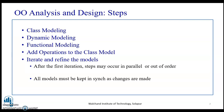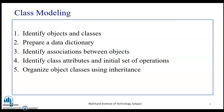After completing these steps, you iterate and refine the model. After the first iteration, steps may occur in parallel or out of order. All models must be kept in synchronization as changes are made. The first step is to create a class model, then the dynamic model, then the functional model. Iterate and refine the model until you incorporate all changes as per the requirement specification.